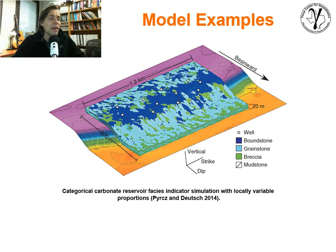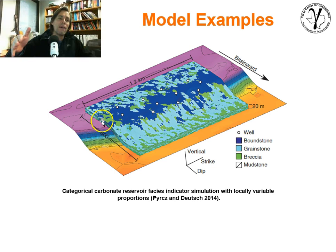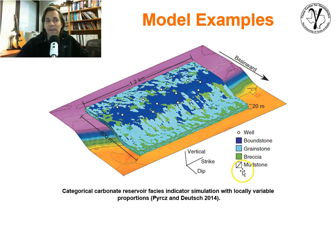Here is an indicator-based simulation I constructed with my co-author Clayton Deutsch, included in our book. We built it with a variety of different trends, trying to capture the idea that on the rim of a carbonate platform you would have boundstone, more breccia lower down, and a lot more grainstone in the back, in the calmer waters away from the edge of the platform. This is an indicator-based simulation with four different facies, with distinct trends incorporated to improve its realism and incorporate geologic information.